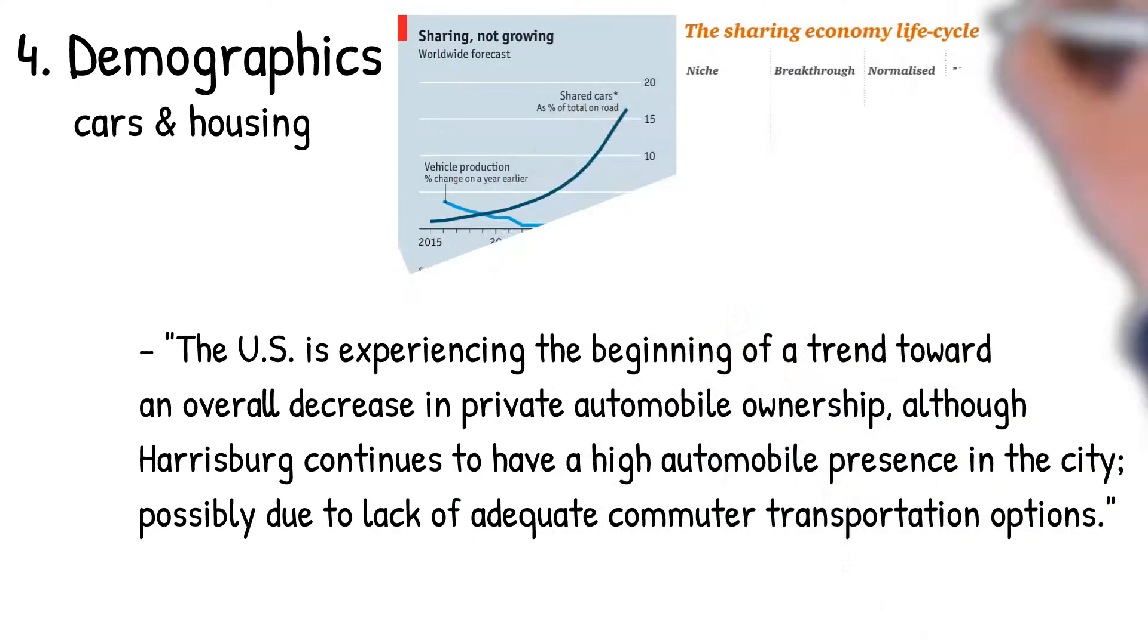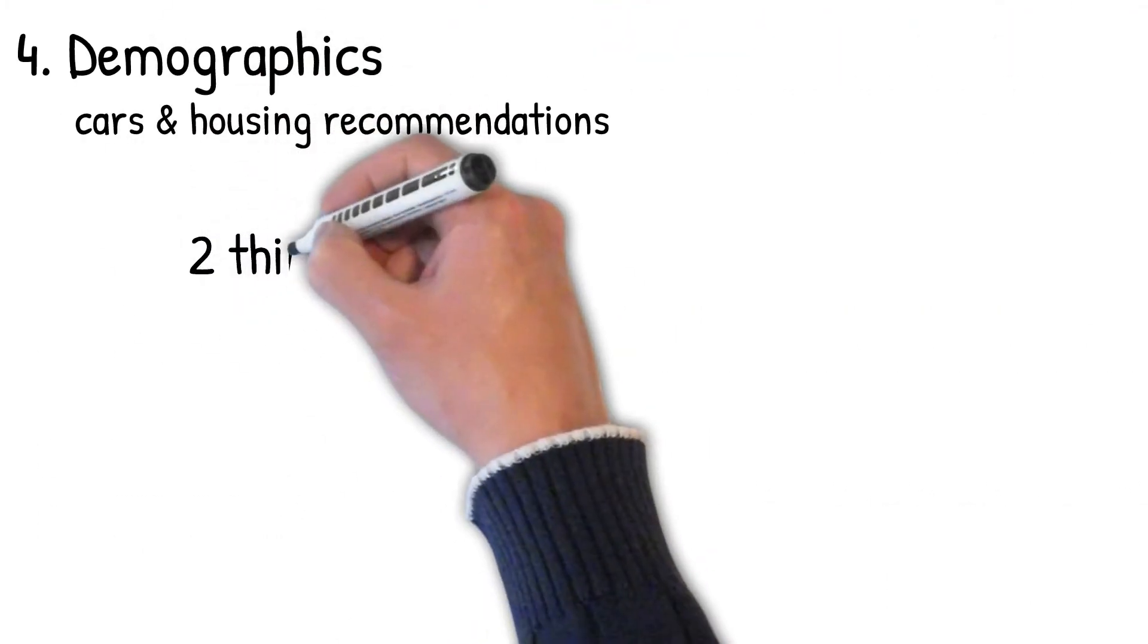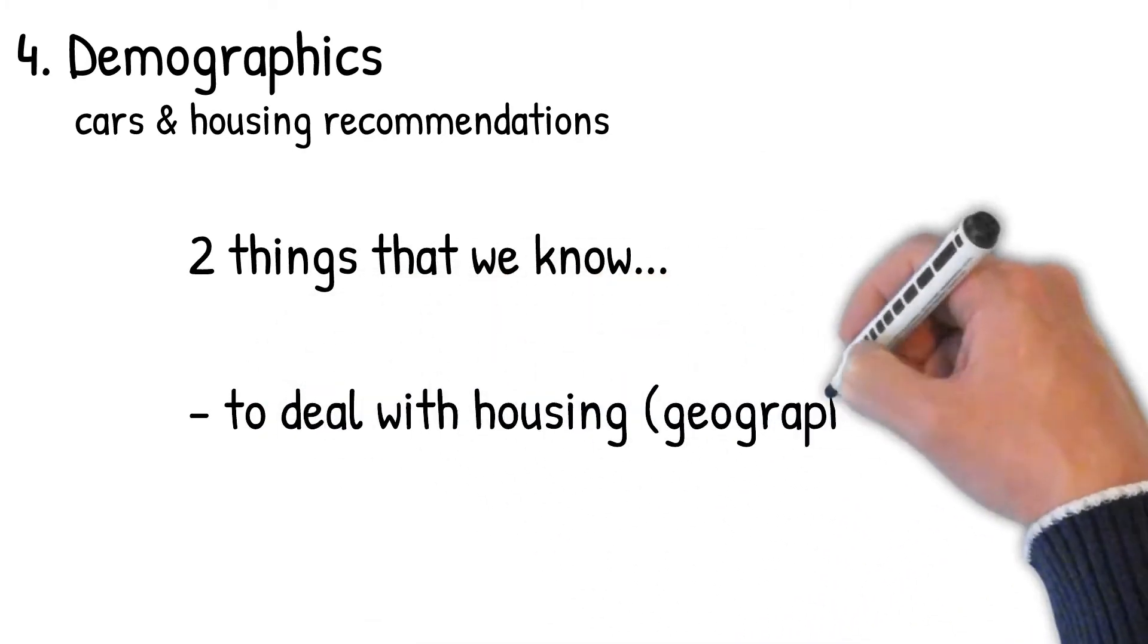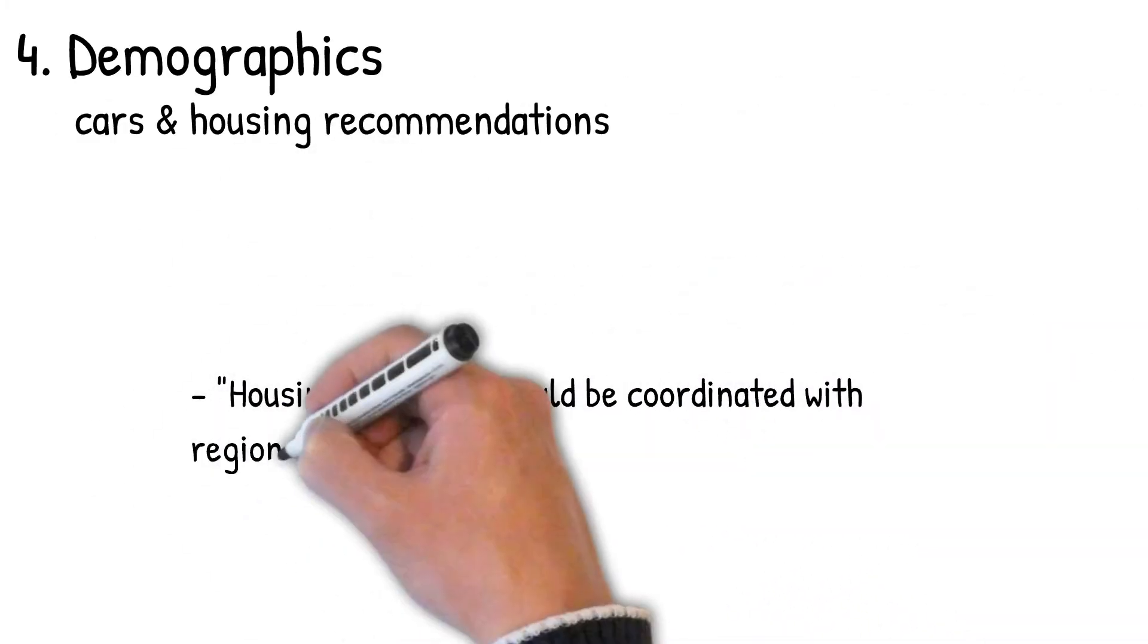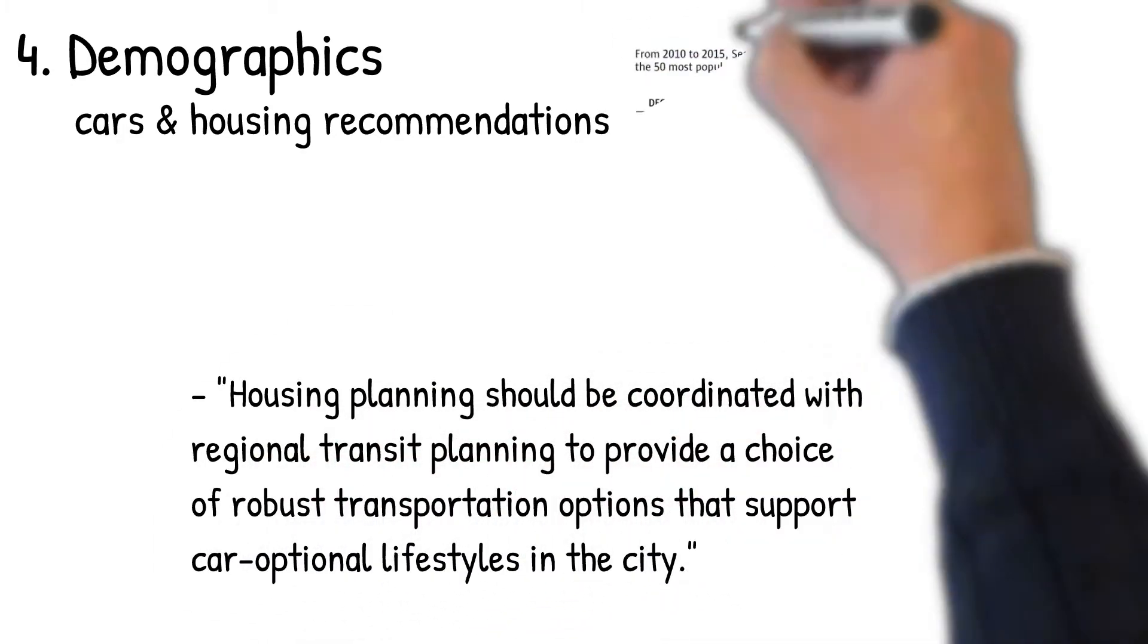If these are two things that we know - if we know that we need to deal with housing and location of live and work and also transportation needs - we could look at a couple of things. I pulled these from the comp plan as three things to be focused on. Housing planning should be coordinated with regional transit planning to provide a choice of robust transportation options that support car-optional lifestyles from the city.